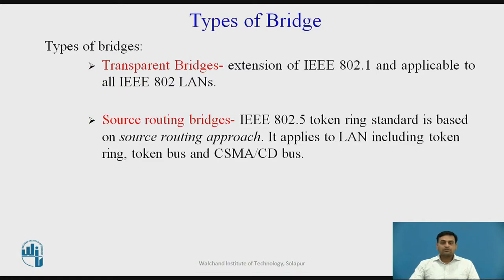There are two types of bridges. The first type is the transparent bridge, which is an extension of the IEEE 802.1 standard and is applicable to all 802 LANs, i.e., Ethernet LANs. The second type is the source routing bridge. The IEEE 802.5 token ring standard is based on the source routing approach, which applies to LANs including token ring, token bus, and CSMA/CD bus.